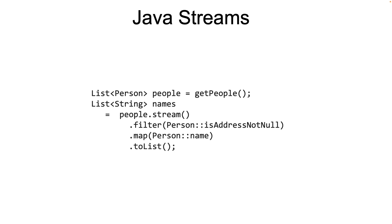In streams, map and filter are considered as intermediate operations which return a stream by itself. On the other hand, the function toList is a terminal operation which converts the stream into a list which a developer can manipulate. So in our example, we end up converting the list of persons to a list of strings. That's pretty easy to do with streams.